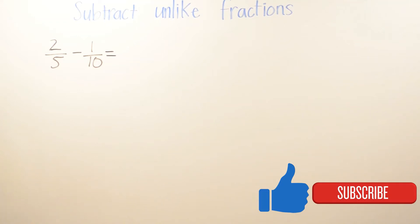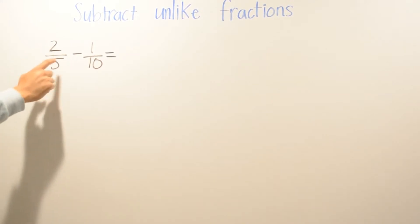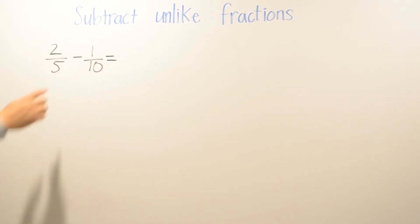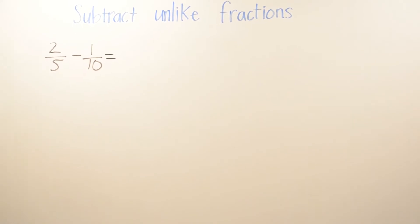In today's video we're going to be talking about subtracting unlike fractions. We have 2/5 minus 1/10. We're going to find the common denominator, so we're going to go ahead and do the least common multiple of the two fractions.